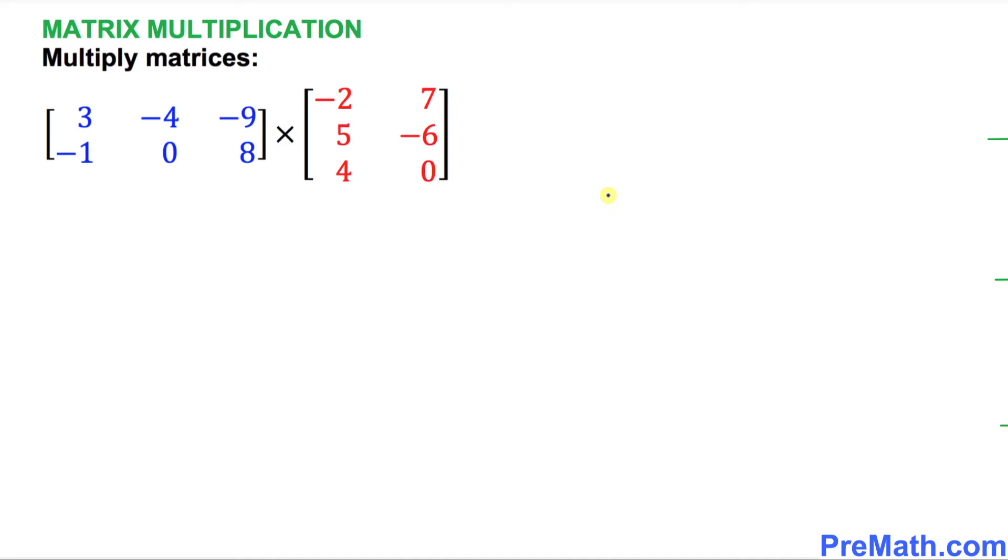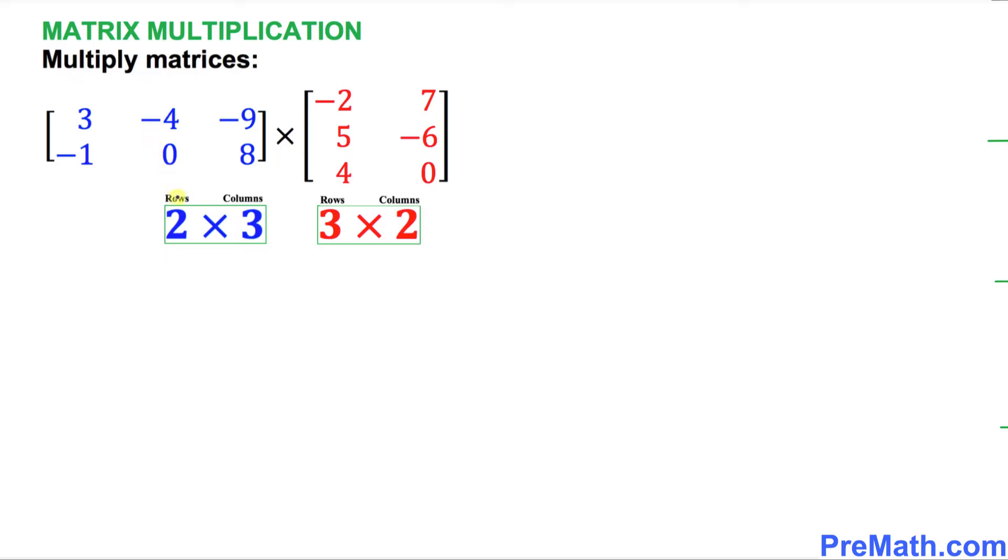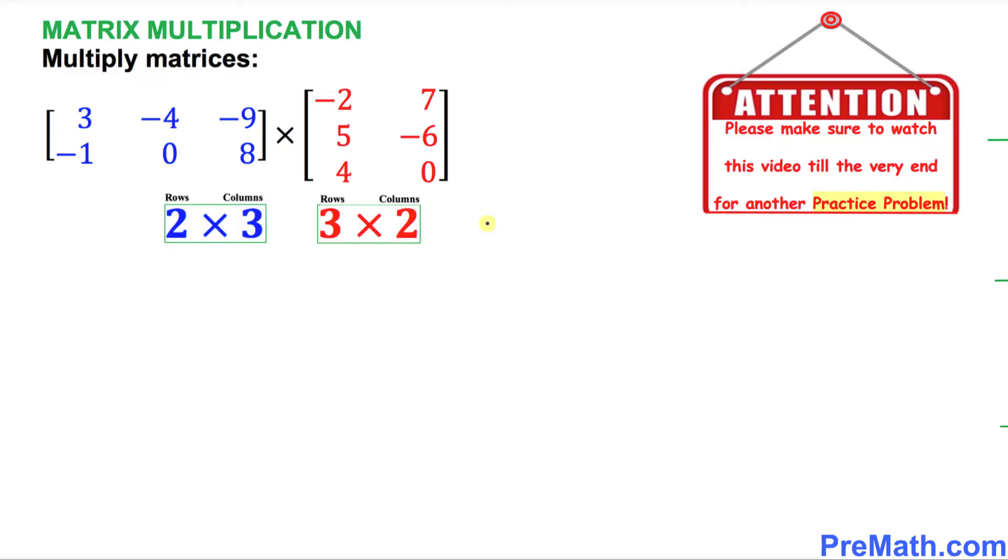Welcome to PreMath. In this video tutorial, we are going to multiply these two given matrices with different dimensions. The blue matrix on the left-hand side has two rows and three columns—no wonder we call it 2 by 3. And the right-hand side red matrix has three rows and two columns. In order to get a full understanding of this topic, please watch this video till the very end for additional practice problems.